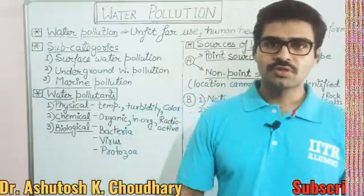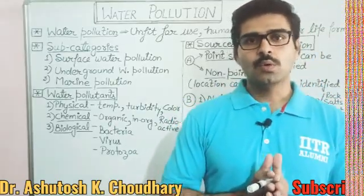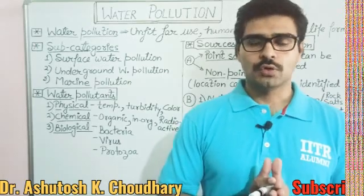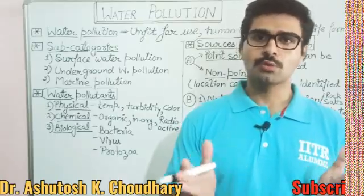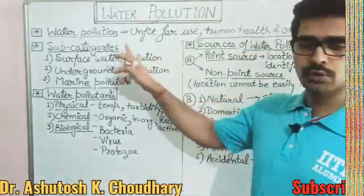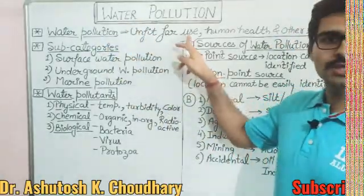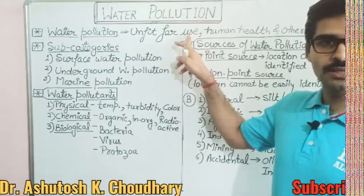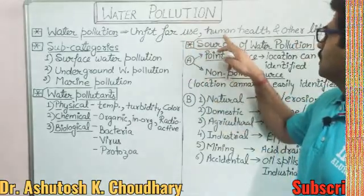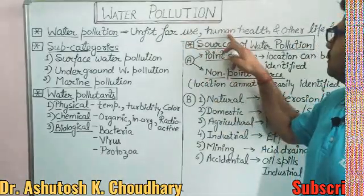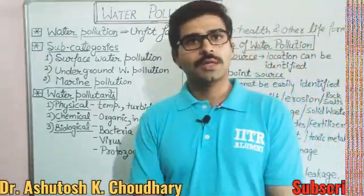First of all, you should know the definition of water pollution. It is very simple: any undesirable change in the physical, chemical, or biological characteristics of water which is harmful for living organisms including human beings. Simply, water is polluted if it is unfit for industrial use, agricultural use, or drinking use.